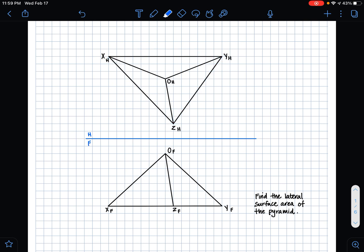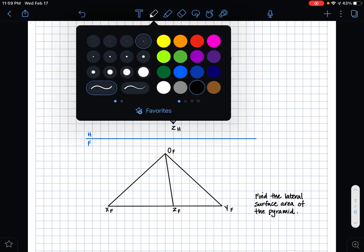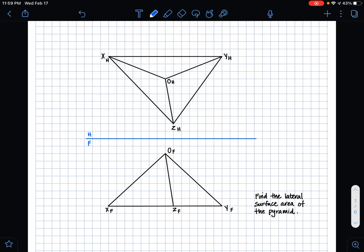And the way that we know that is because if we look at our frontal plane, we can see that this bottom line that makes up the base of the pyramid in the front view is parallel to our HF folding line.